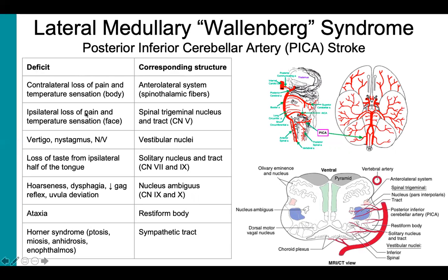A lesion to the anterolateral system, which contains spinothalamic fibers, gives us contralateral loss of pain and temperature sensation to the body. Damage to the cranial nerve 5 spinal trigeminal nucleus and tract gives us ipsilateral loss of pain and temperature sensation to the face. A common theme we'll see with brainstem syndromes is deficits to the body and face being on opposite sides.